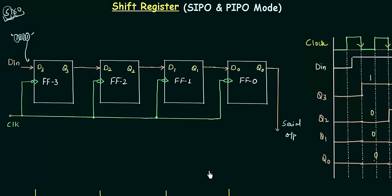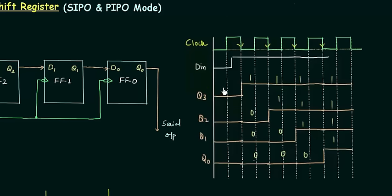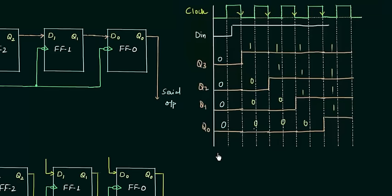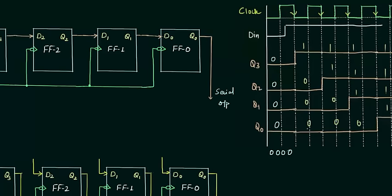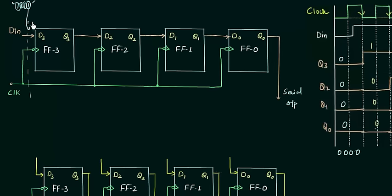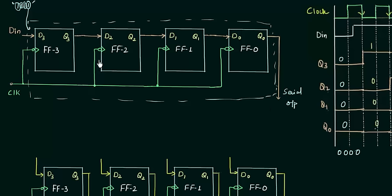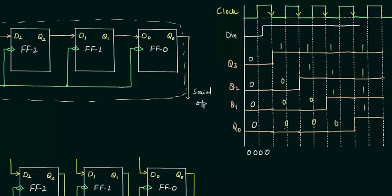We also obtained these waveforms. Before the first falling edge arrives — because all the flip-flops are negative-edge triggered, all changes occur on the falling edge — the values for Q3, Q2, Q1, and Q0 are all 0. This whole circuit will come in a package and you have the output as Q0 only; Q3, Q2, Q1 are internal outputs and will not be reflected outside the IC. So what is the value of Q0 before the first falling edge? It is 0.